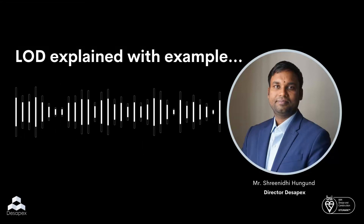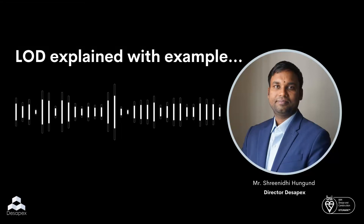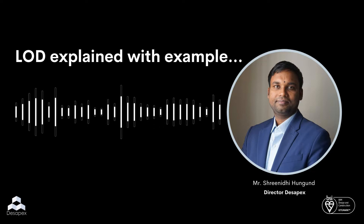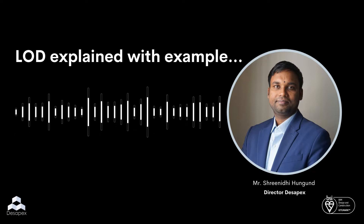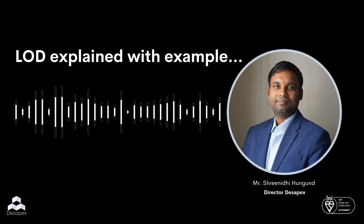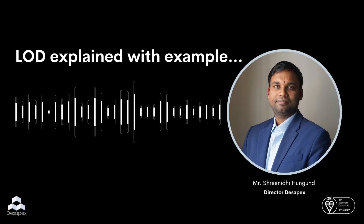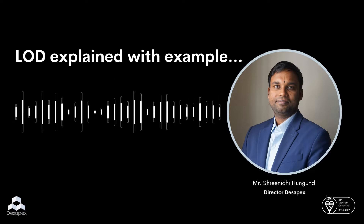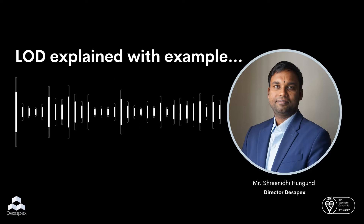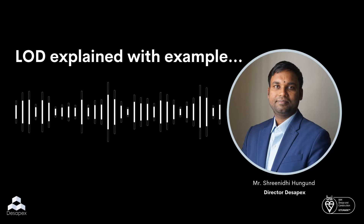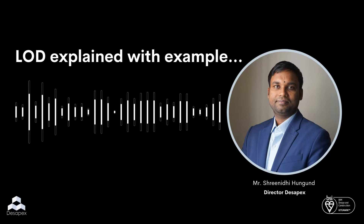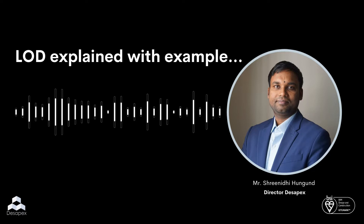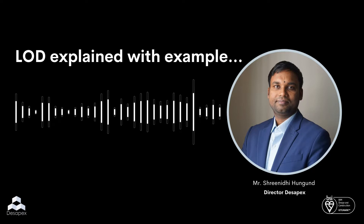We can discuss this by having an example. If you ask me, there is a chair and we want to define that this chair has to be represented in 3D, then we need to give two kinds of information into that 3D object so that it looks similar to the chair. One thing is the geometric details.